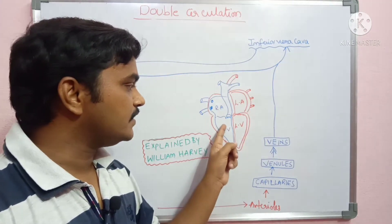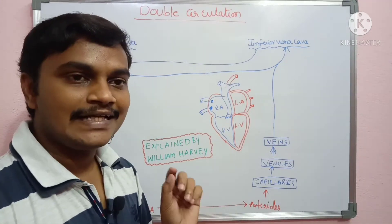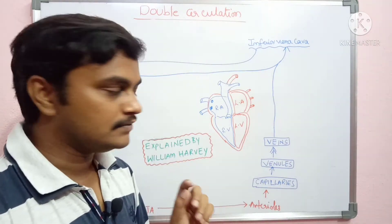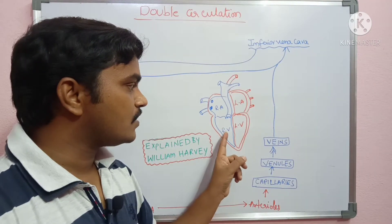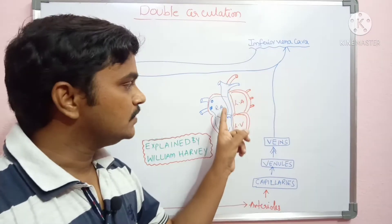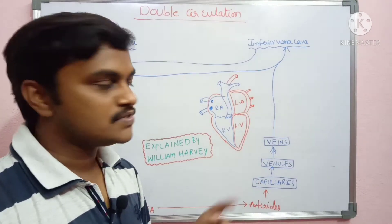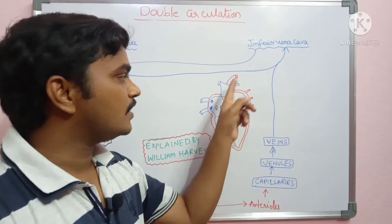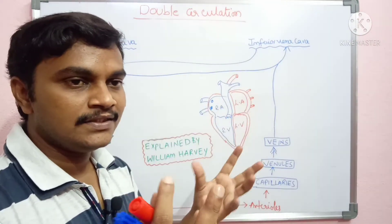From the right atrium, blood is transferred to the right ventricle through the tricuspid valve. From the right ventricle, deoxygenated blood is transmitted to the lungs through the pulmonary artery, which branches to the left and right lungs.